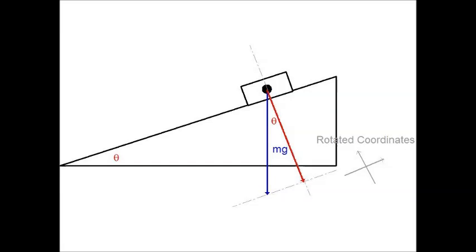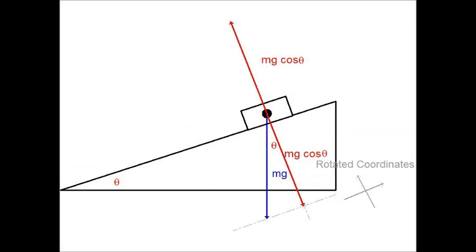We know that the two triangles are similar and the thetas are the same, because we have similar triangles. So now, we can determine the component, mg cosine theta, adjacent to that theta. And then, we have the normal force, which is in response to the push down on the surface of the block, and it's also going to be equal to mg cosine theta, pointing perpendicular to the surface.